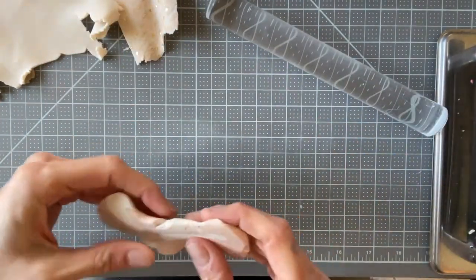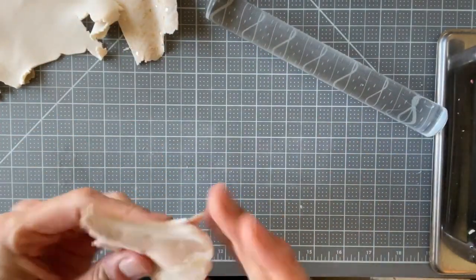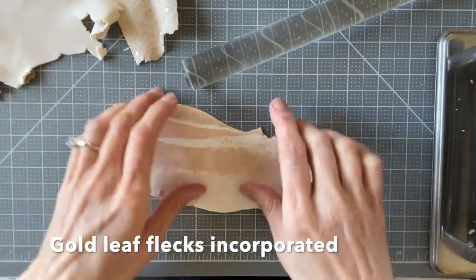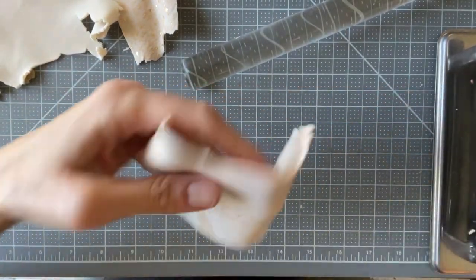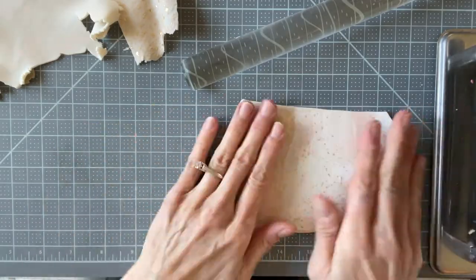To make different patterns you can tear and reassemble it and then roll it again. You can use as many colors as you'd like. The more you roll the marbled clay the more the colors incorporate into each other.